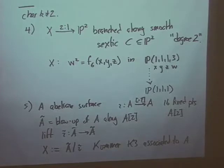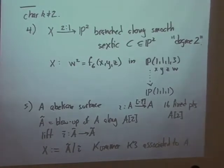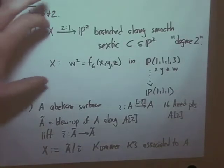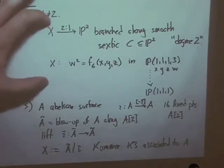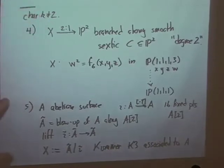So those are the five kinds of examples that I want you to keep in mind, and probably the K3 surfaces of degree two are going to be the ones that feature most prominently.